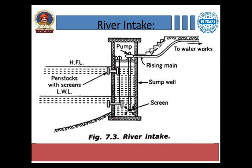Next, river intake. If there is a certain river and there is no provision of any dam, but you have to collect water from the river, then you have to provide this type of structure. There is also a penstock with a screen at the low water level and also at HFL — High Flood Level. HFL means high flood level: when there is full supply to the river and it gets flooded in the rainy season, the level achieved by the water in the river at its highest point is known as the high flood level. Various types of pipes are provided at different levels, which collect the water and draw it into a vertical section, which is then pumped and supplied to the treatment plant.